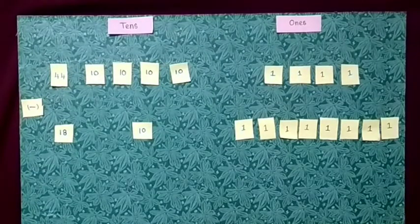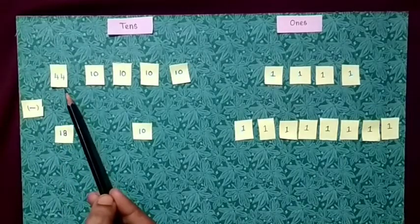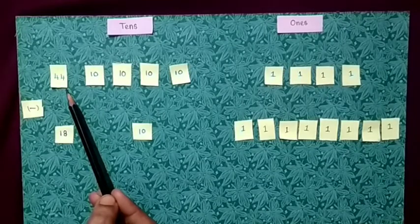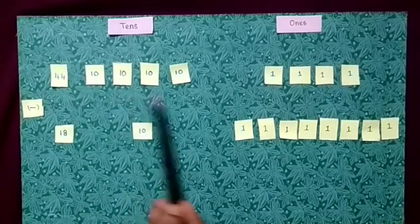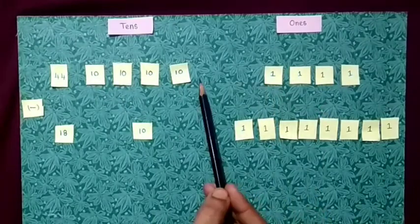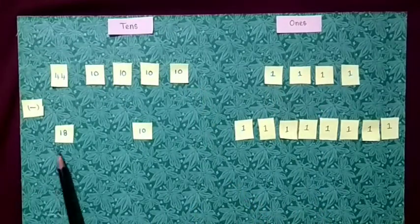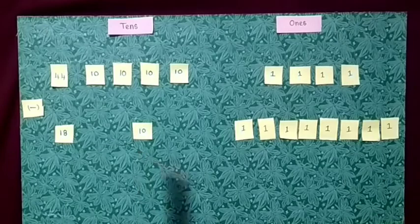Now we are going to subtract 18 from 44. In 44, how many tens and how many ones are there? There are 4 tens and 4 ones. In 18, there are 1 ten and 8 ones.